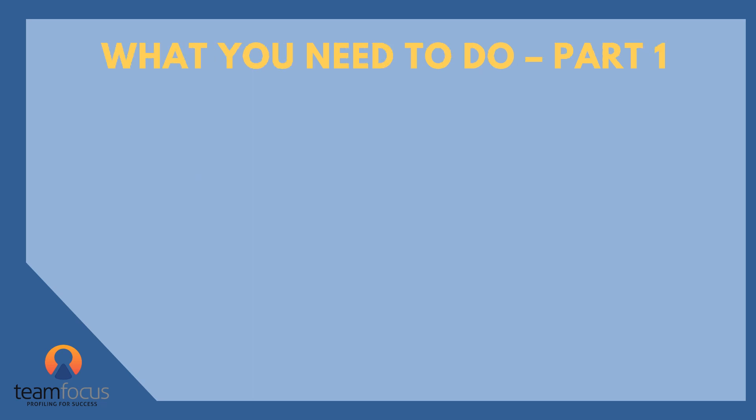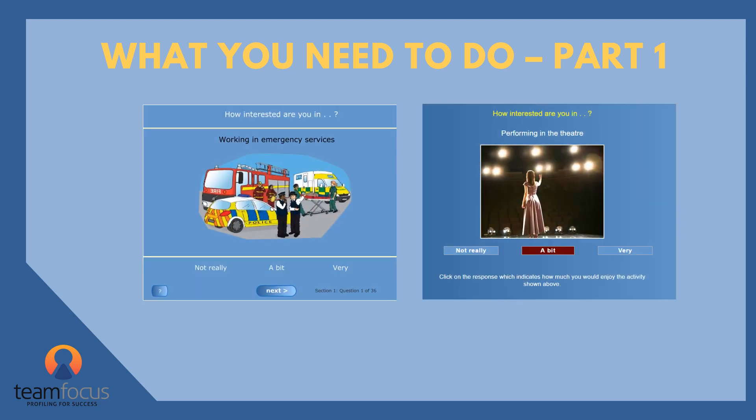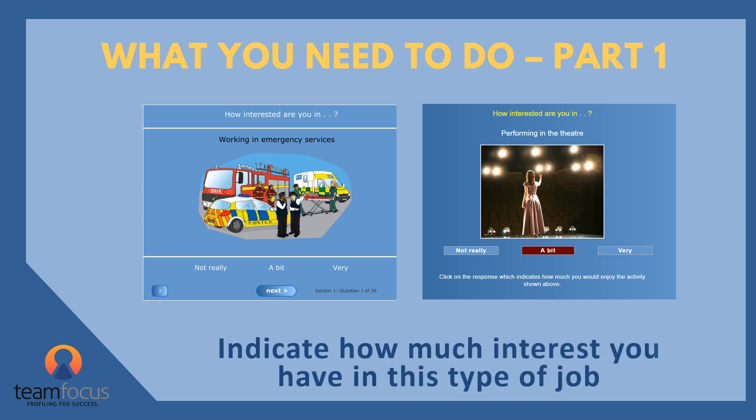When you've finished watching this video you simply need to click on the link that takes you to the CII. On screen there will be clear instructions of how to complete the inventory, and there are two versions. Both present you with 36 pictures, either like this or like this, and whichever version you complete you are asked to indicate how much interest you have in these different kinds of jobs.